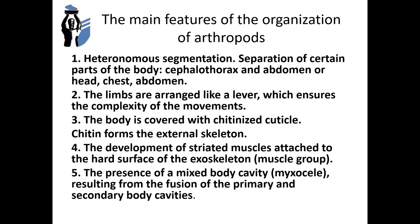The type Arthropoda is the most numerous in the animal kingdom. Its representatives have mastered all habitats in all geographical latitudes. The plan of the structure of the bodies of arthropods can be considered as an improved plan of the structure of the segmented body of the annelids. The body shows heteronomous segmentation, with separation of certain body parts: cephalothorax and abdomen.